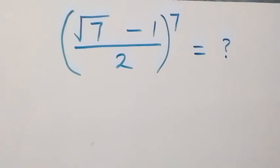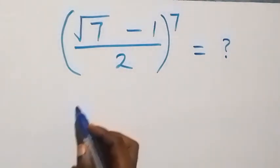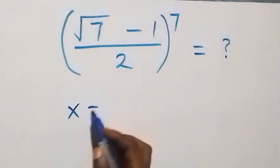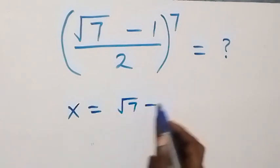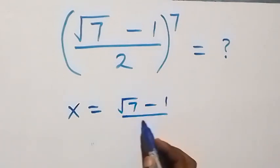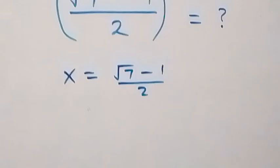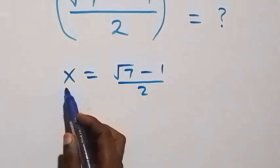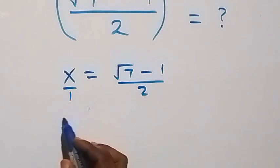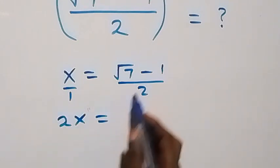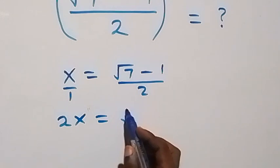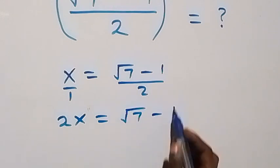Hello, you are welcome. How to solve this power problem involving roots. Let what is inside here be a letter, so let x be equal to (√7 - 1) / 2. From here we can cross-multiply: 2 multiplied by x gives 2x, then √7 minus 1 times 1 is still √7 minus 1.